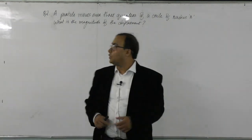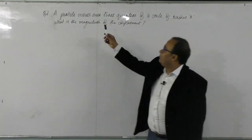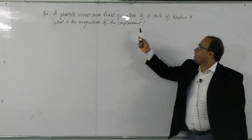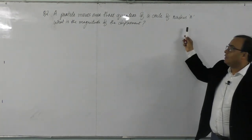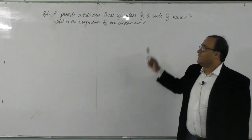Now we will discuss question number 2. Question number 2: a particle moves over 3 quarters of a circle of radius r. What is the magnitude of the displacement?